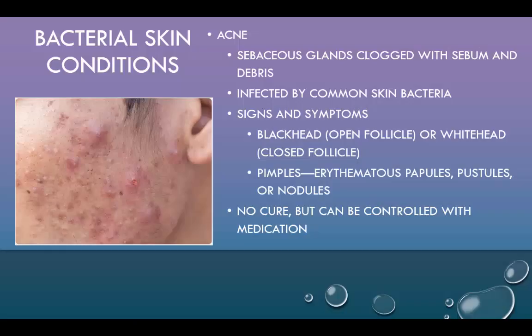Acne is experienced by most adolescents at one point or another. Its cause is unknown, but it is believed to be due to a hormonal imbalance. At eight or nine years of age, the adrenal gland begins to produce increasing amounts of androgen that causes the sebaceous glands to enlarge and produce more sebum. Sebum secretion peaks during adolescence and declines after age 20. Sebaceous glands get clogged with sebum and debris from the face and can become infected by common skin bacteria. Blackheads are not dirt, so scrubbing will not remove them. A whitehead represents follicles dilated with cellular debris with only a microscopic opening to the skin surface. A pimple occurs when sebum and other material in the whitehead breaks through the pore wall and causes irritation underneath the skin. These are commonly seen on the face, neck, and back.